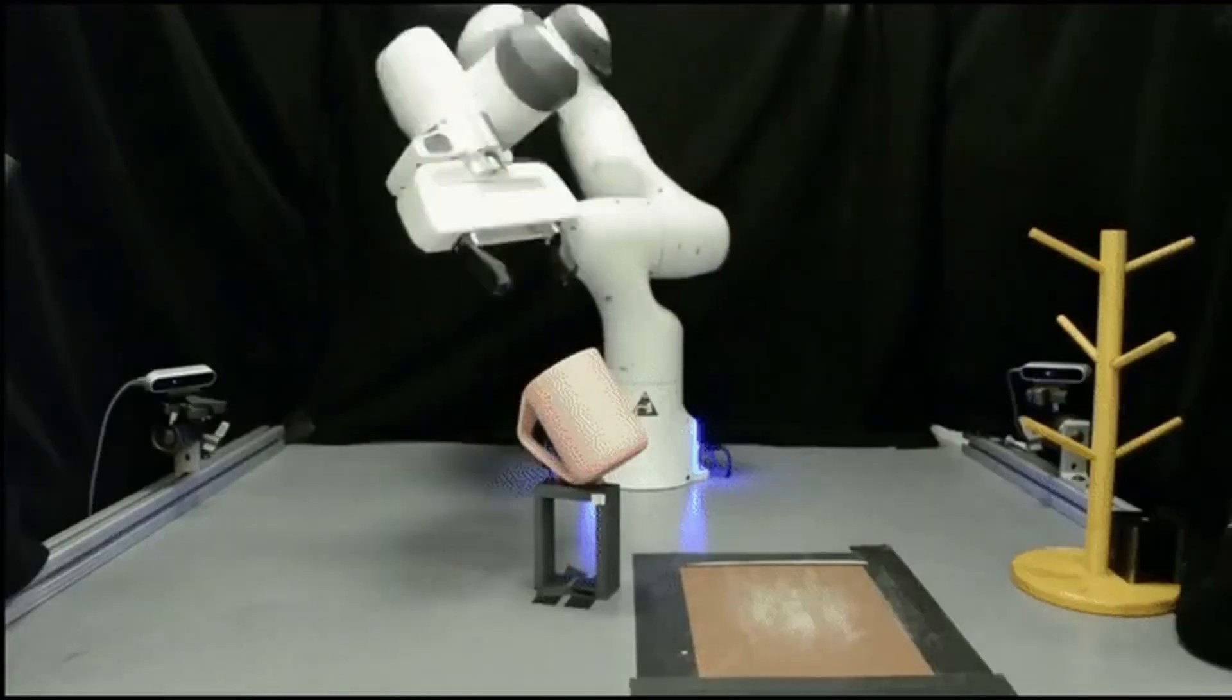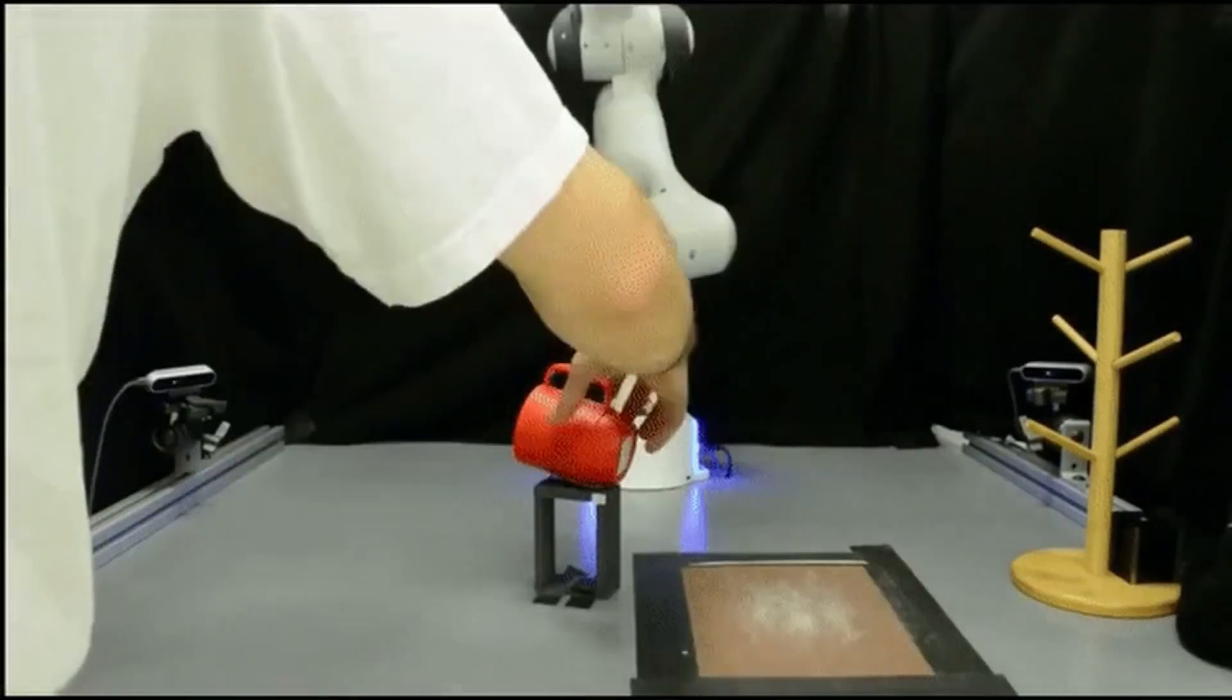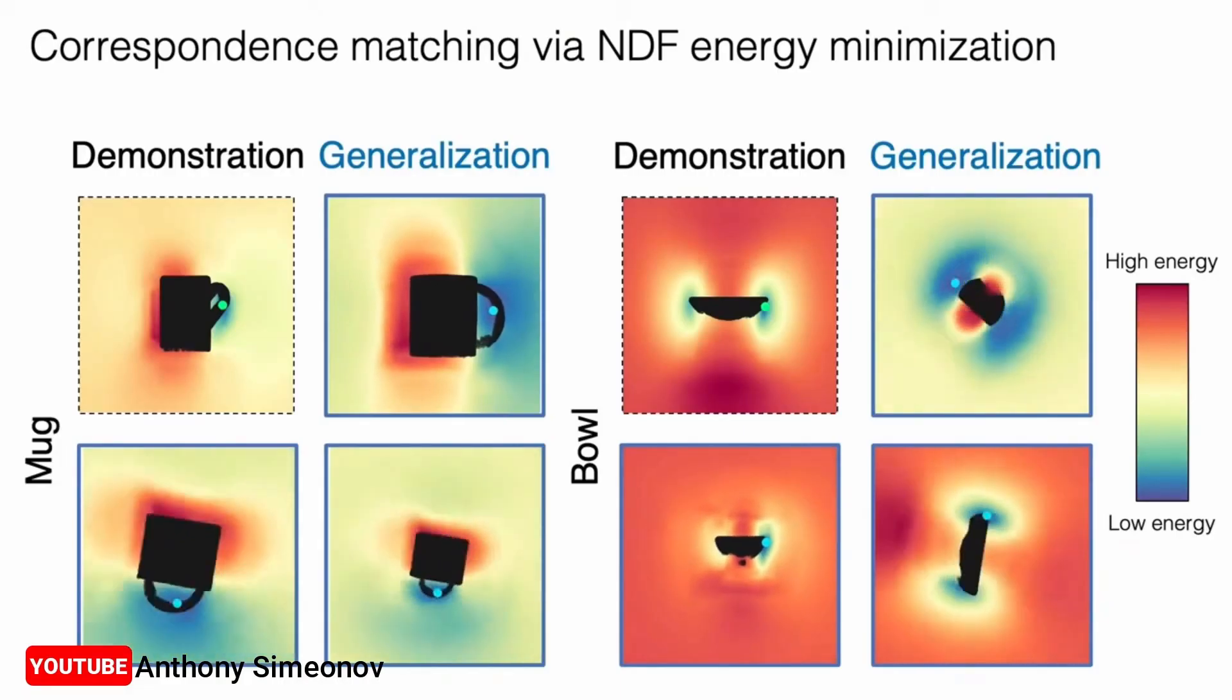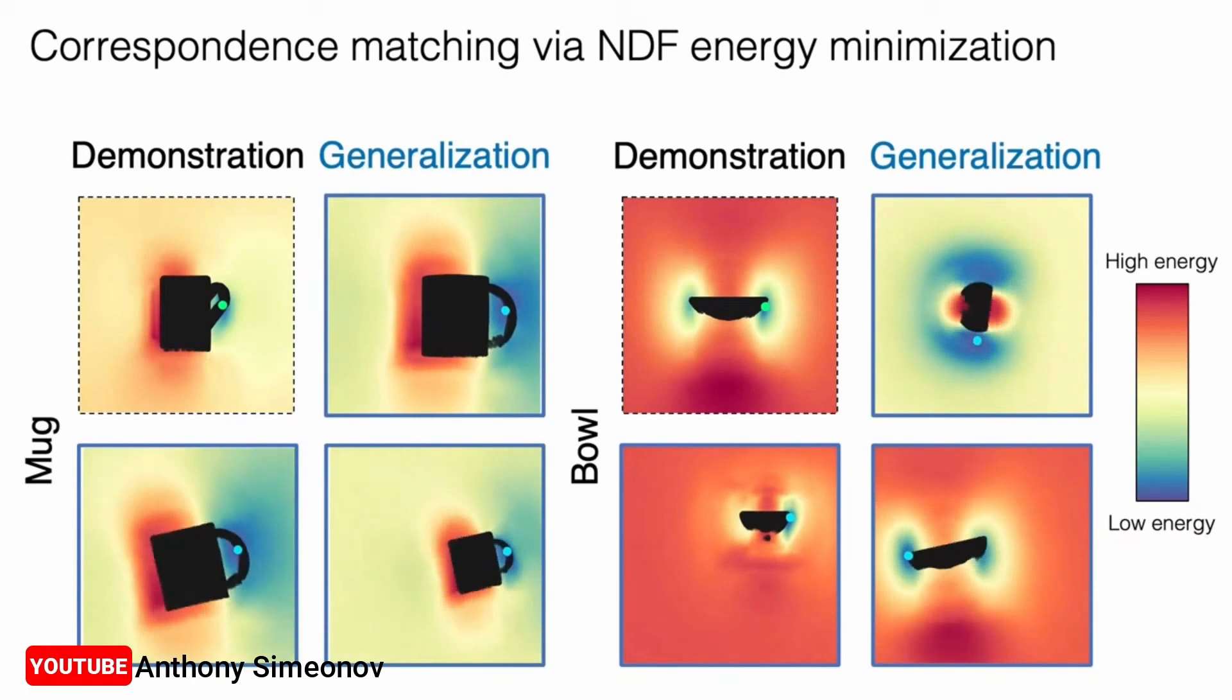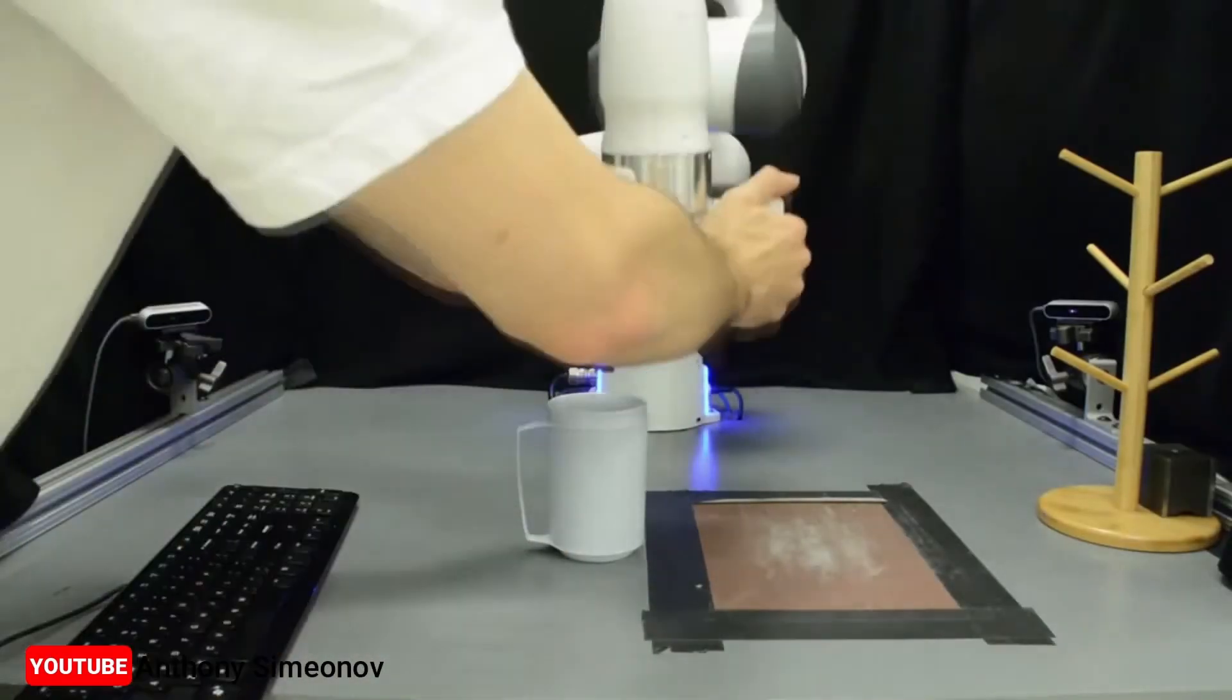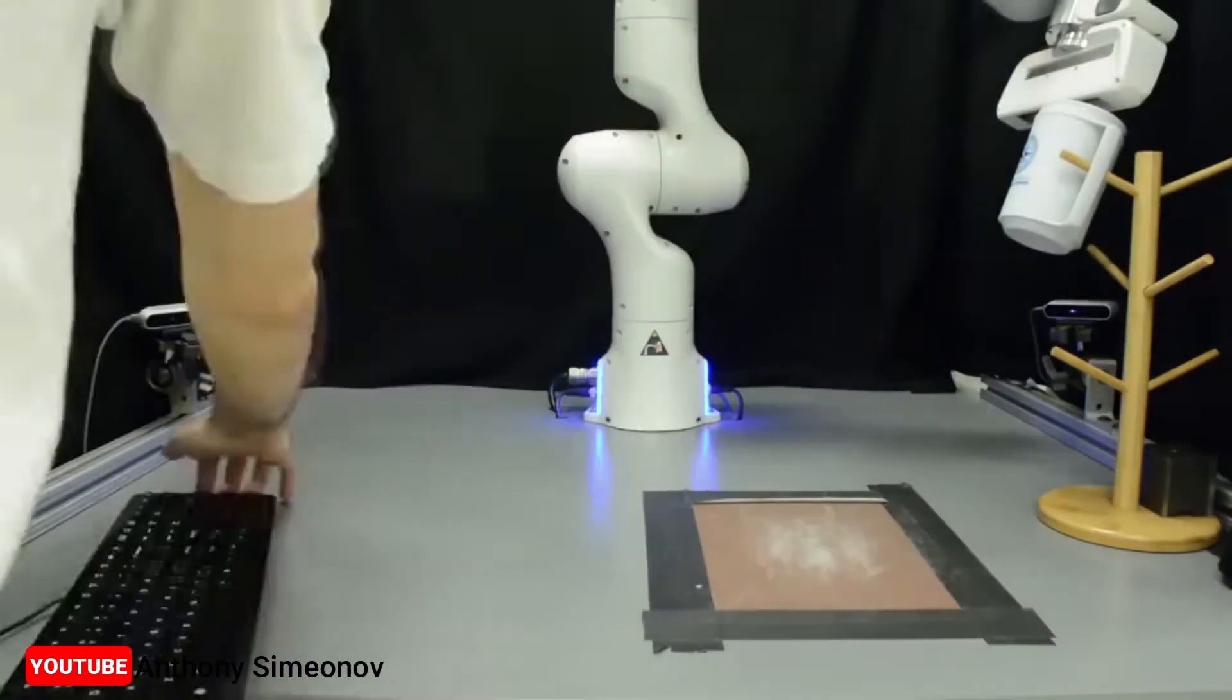This equivariance is what allows them to much more effectively handle cases where the object they observe is in some arbitrary orientation. As the NDF learns to reconstruct shapes of similar objects, it also learns to associate related parts of those objects. For instance, it learns that the handles of mugs are similar, even if the mugs are taller or wider than others, or have smaller or longer handles.